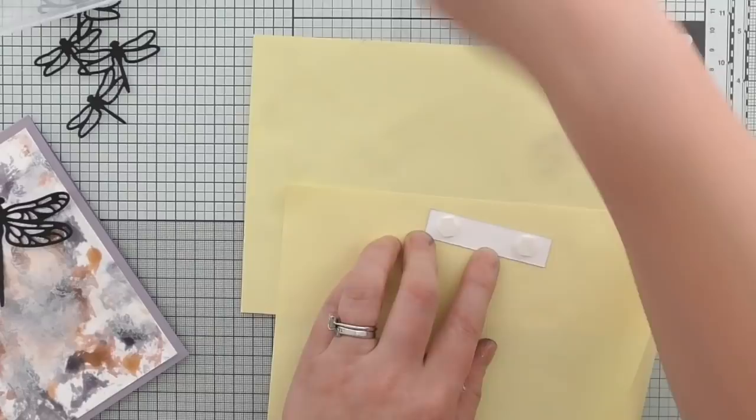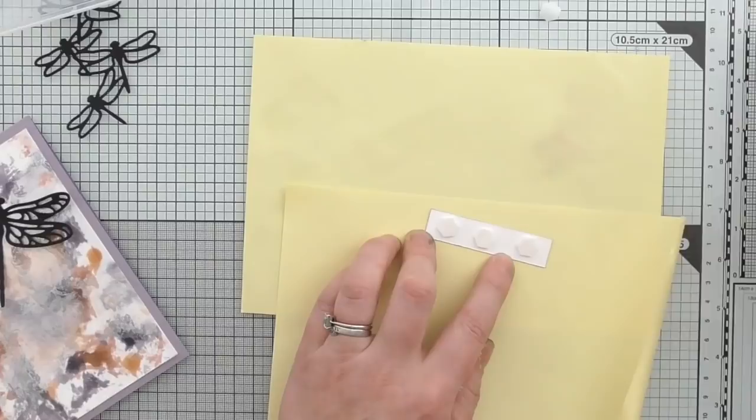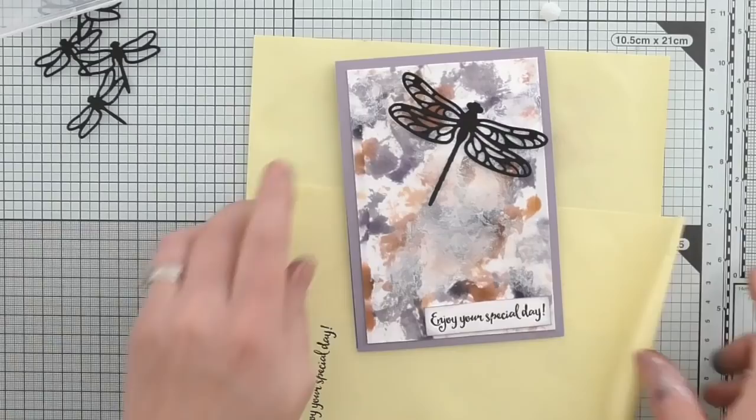And I am going to just very gently with hammer and feather ink the edge of that just so that it's not so stark white against that inked background. A little heavier on the corners. There we go. We will get our dimensionals and then we can see what space we've got left if any for some more dragonflies. There we go one two three. Enjoy your special day. We'll have that there in the bottom. Doesn't that look lovely? I think that's gorgeous.